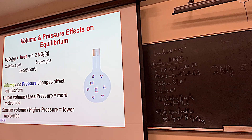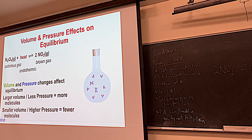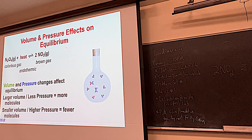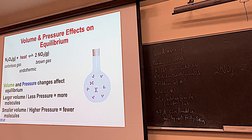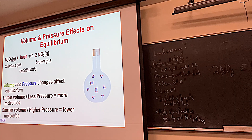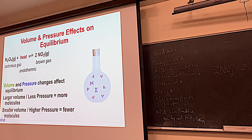In a sealed flask with 3 NO2 molecules per N2O4 at equilibrium: if we transfer the mixture to a smaller flask, NO2 molecules combine to form N2O4 — decreasing the total number of gas molecules — and the system compensates for the reduced volume by reducing gas pressure. To analyze volume/pressure problems: first confirm gases are present (solutions → no effect), then count total moles of gas on each side.